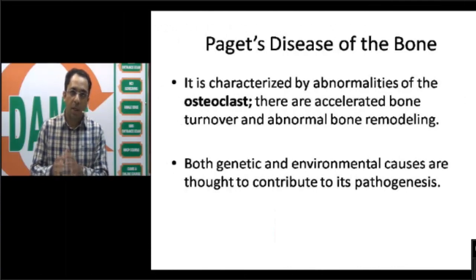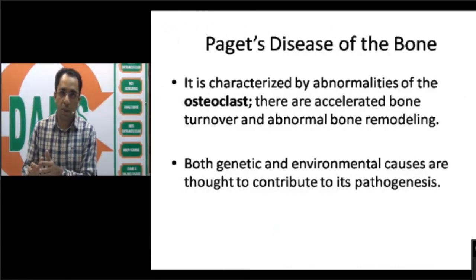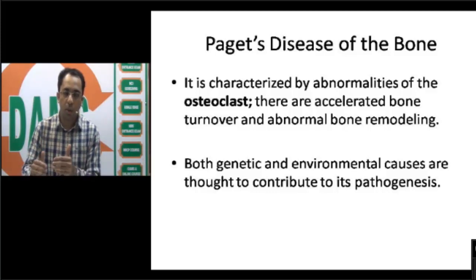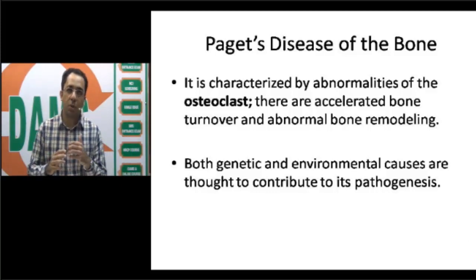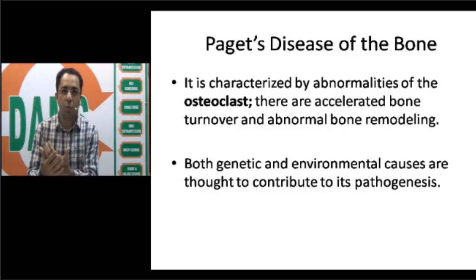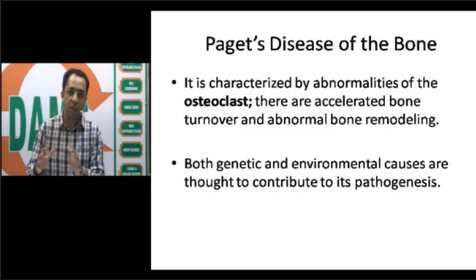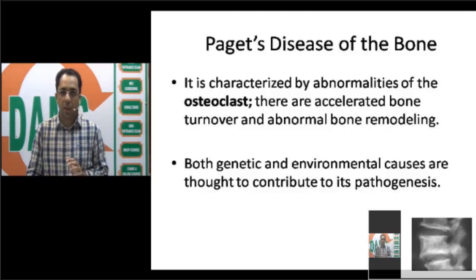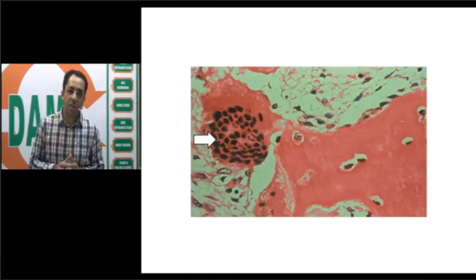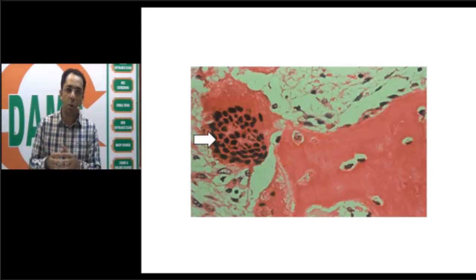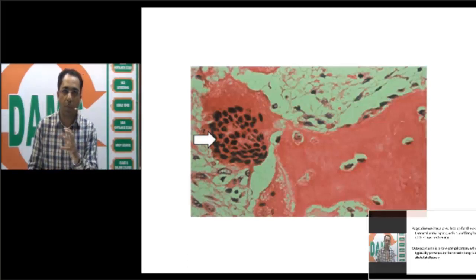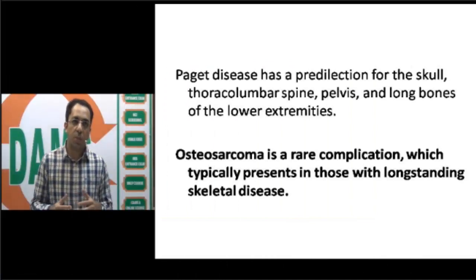What is actually happening here is that it is primarily a disorder of the osteoclast, leading to accelerated bone turnover and abnormal bony remodeling. Genetic, environmental causes, and even viral etiology have been proposed, though we are not sure about the pathogenesis. On histological slides, you see an abnormal number of abnormally large, multinucleated bizarre osteoclasts, as shown in this slide marked by the arrow.